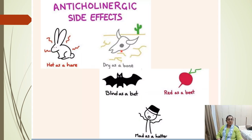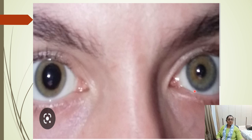The anticholinergic toxidrome mnemonic: 'Hot as a hare, dry as a bone, blind as a bat, red as a beet, and mad as a hatter' — these are all signs and symptoms of datura poisoning, anticholinergic drug toxicity, or atropine poisoning. This final image shows dilation of the pupil.